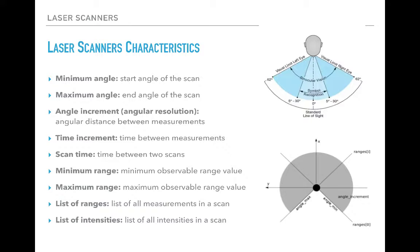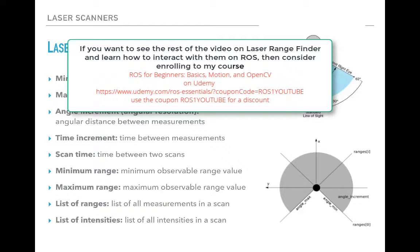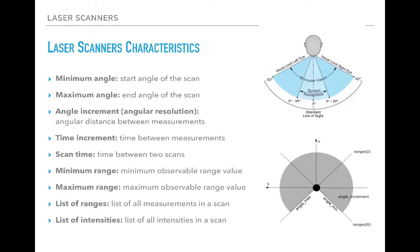A very important characteristic of the laser scanner is the range, specifically the minimum range and the maximum range. The minimum range represents the minimum observable distance — some sensors cannot detect objects closer than, for example, half a meter or one meter. The maximum range is even more important: some sensors can see only four meters away, while others can reach 10, 20, or 30 meters. The maximum range varies from one laser scanner to another.